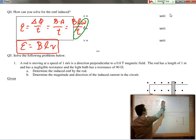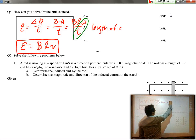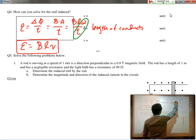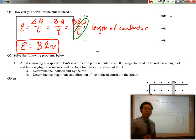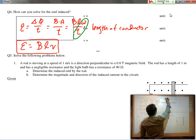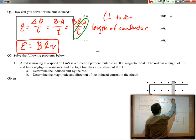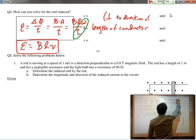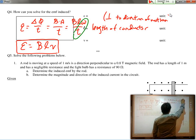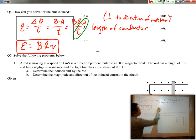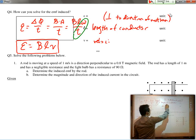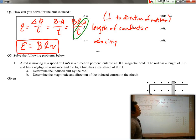So, L is the length of the conductor. And the most important thing to remember about the length of the conductor is that it must be perpendicular to the direction of motion. And V, of course, is the velocity and also points which way it's going.